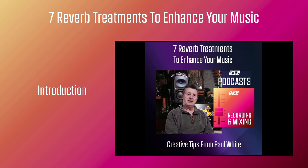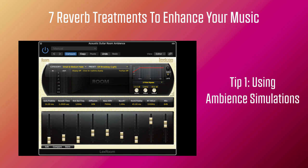Here's my first tip. If you need to create a sense of space without adding an obvious reverb decay or tail, rather than just using a short reverb, call up an ambience or early reflection setting. These replicate the various reflections that occur in a real space, but without adding a reverb tail. Here's an example, first with a dry sound, and then repeated with added ambience reverb. You'll hear that the treated sound takes on a sense of space and stereo width, but there's no reverb tail.